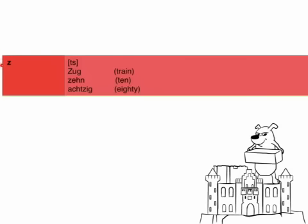Another very common mistake is the Z. In German, Z is not a Z sound at all — it's really a TS. If you keep in mind to cross out every Z and write TS, you're right. So: 'Zug', 'zehn', 'achtzig'. There is also no difference in pronunciation when you have T-Z — it's still TS.